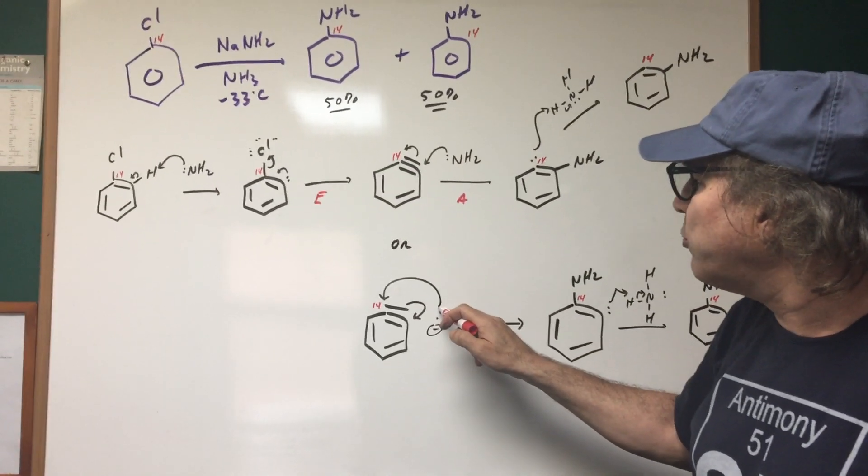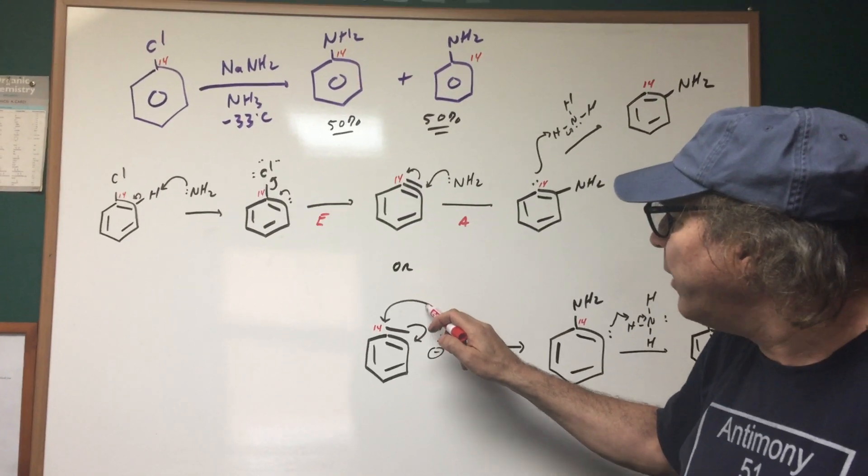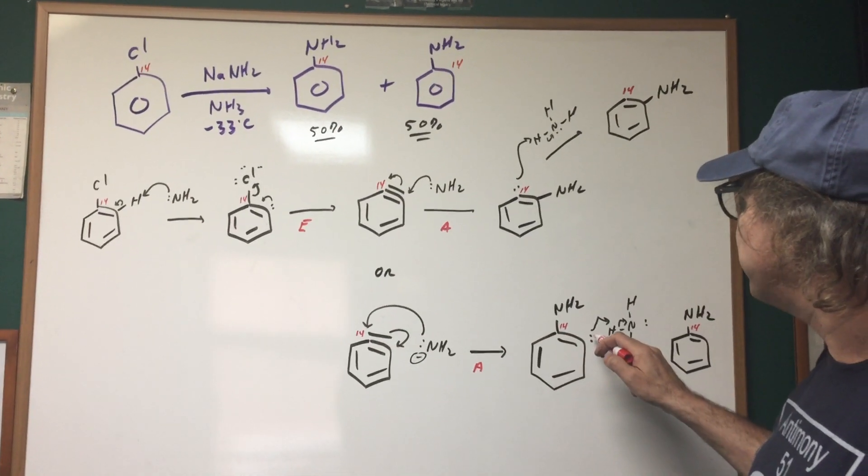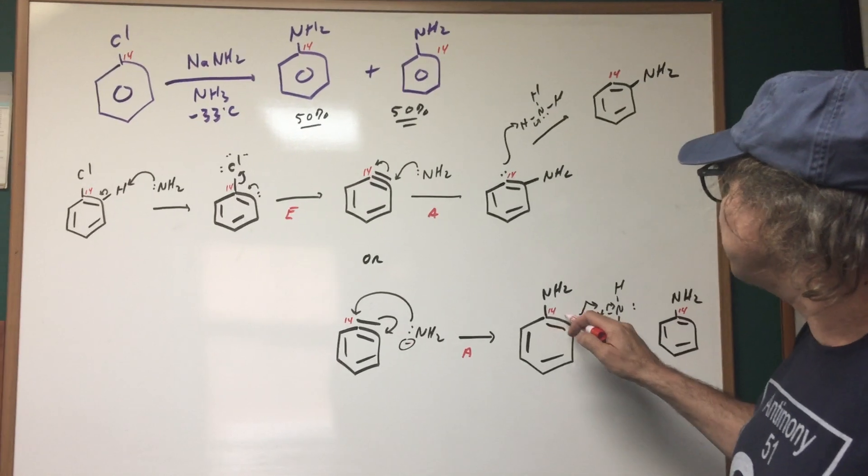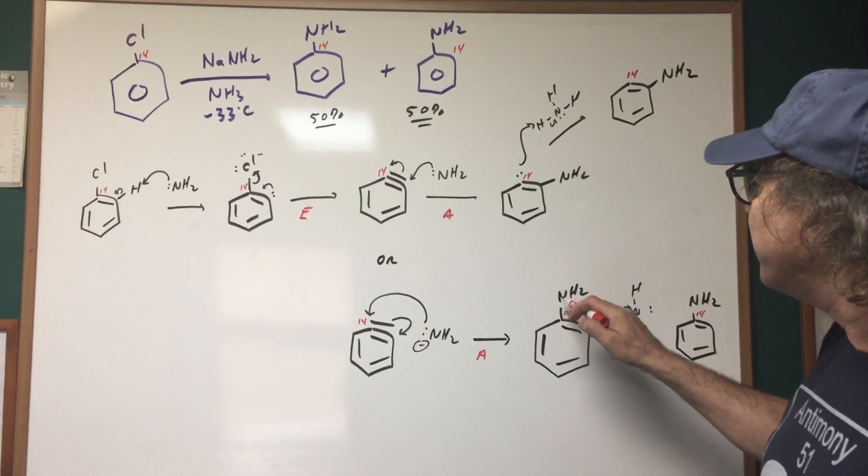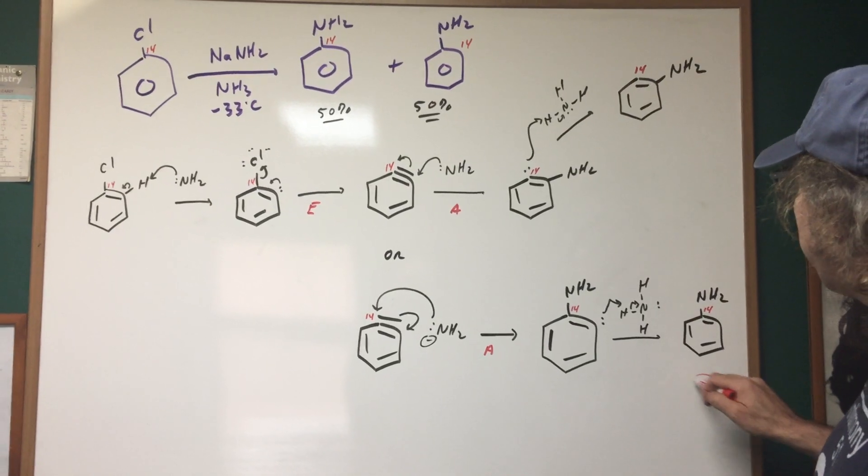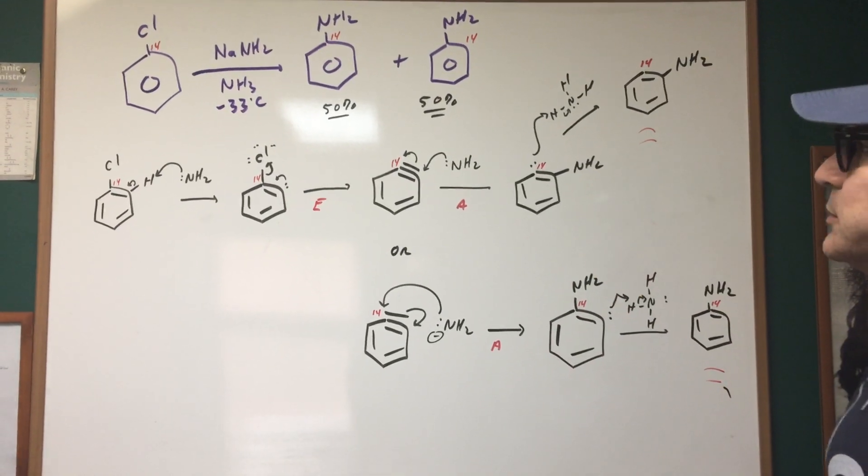And if I did that, electrons move out and you form the second carbanion. But this time, the nucleophile is on the radio labeled carbon. So if you go back, you pick up an H and you get your second product. So as you can see, this is actually a question in the destroyer.